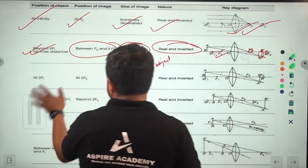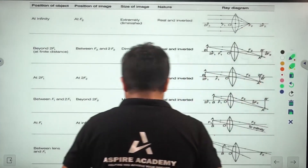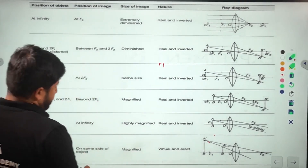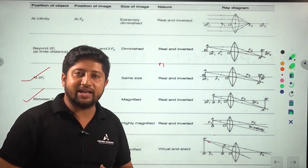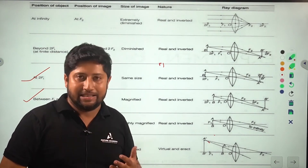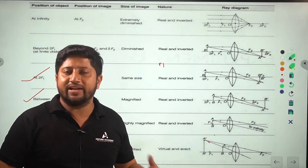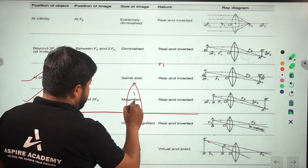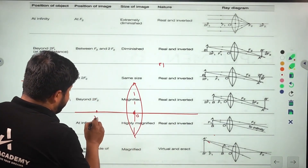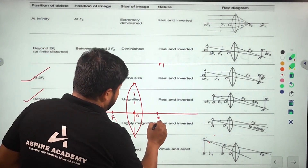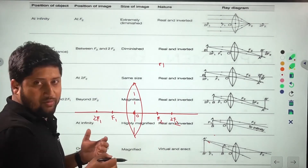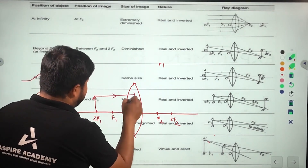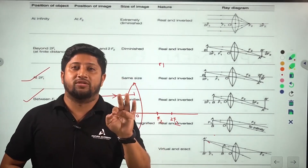Next case: when the object is placed at twice f1 in a convex lens. This is the convex lens, this is the optical center, this is twice f1, this is f1, f2, and twice f2. Whenever the object is placed here at twice f1, which means at the center of curvature, after refraction — note this is refraction in a lens, not reflection in a mirror.